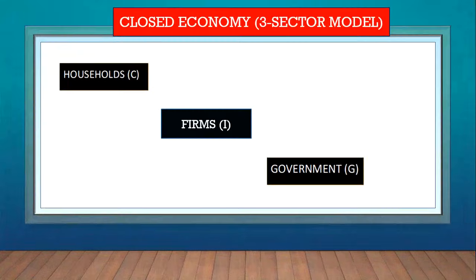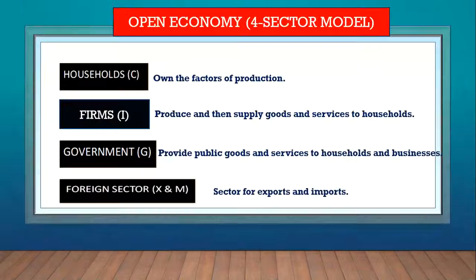Welcome to part one of the circular flow model. If we're looking at only two participants in the economy — households and businesses — that would be a two-sector model. If we add the government, we've got a three-sector model, but this is still a closed economy because we do not have the foreign sector. If we add the foreign sector, the economy is open because we are trading with the rest of the world, so there are exports and imports.